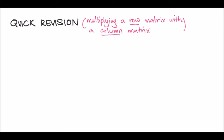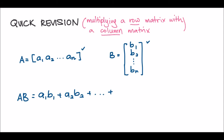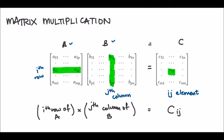Just a quick revision on how to multiply a row matrix with a column matrix. If we have a row matrix A and a column matrix B, the product A times B is computed by multiplying corresponding elements: A1 times B1, plus A2 times B2, and so on until A_n times B_n. Using this formula, you can easily find every element of C.